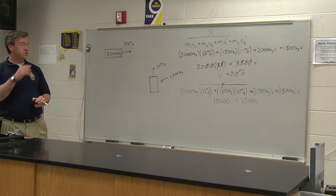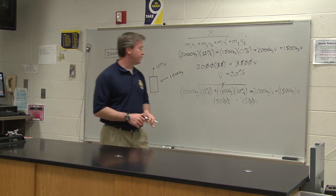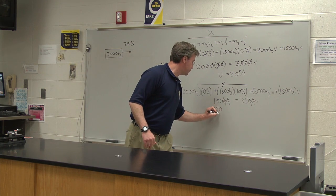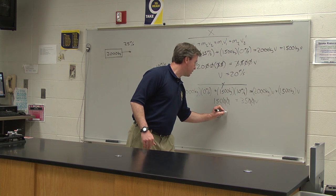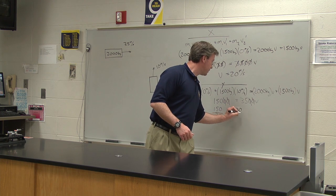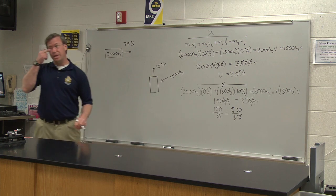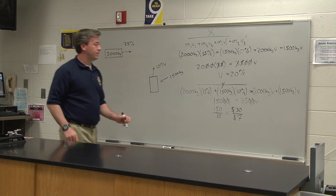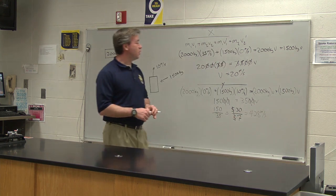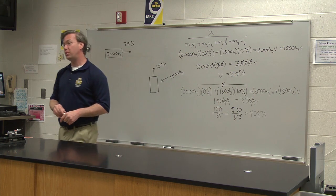Solving for v: canceling zeros gives 150 divided by 35, which is the same as 5 × 30 divided by 5 × 7. Cancel the fives and you get 30 divided by 7, which equals 4.28 meters per second. So after the collision we have a velocity of 20 m/s in the x-dimension and 4.28 m/s in the y-dimension.